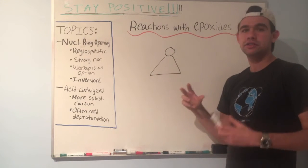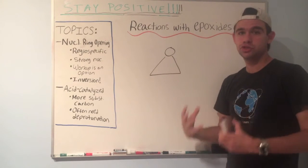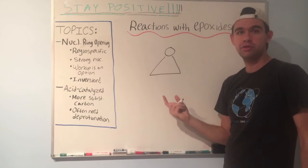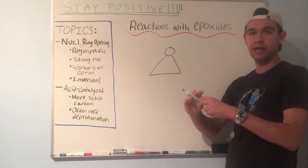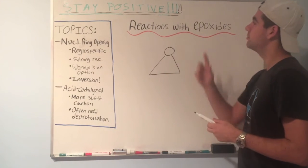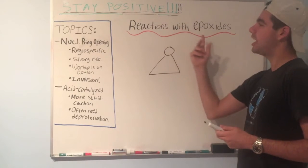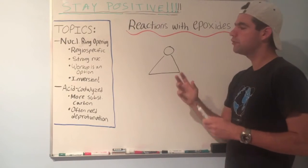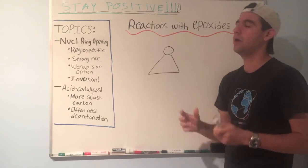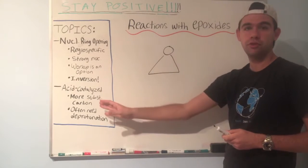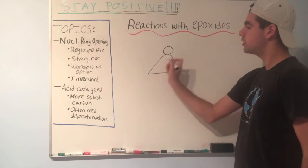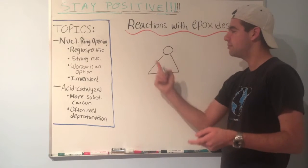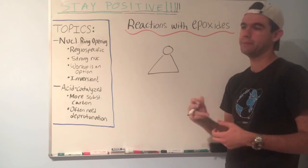Having three atoms in a ring causes a lot of ring strain, and that makes these carbons highly susceptible to nucleophilic attack so that the ring can be opened. Virtually all reactions with epoxides that you'll be responsible for involve opening the epoxide ring somehow. The ring strain makes these carbons more susceptible to attack and the epoxide more susceptible to opening.